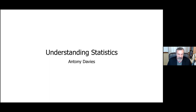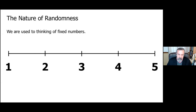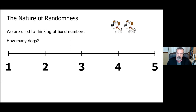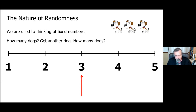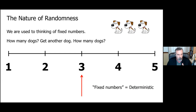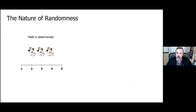I'm going to talk about understanding statistics, and this whole story begins with how we learn mathematics. When we learn mathematics, we're used to thinking of fixed numbers. You have a number line, and your teacher says how many dogs are there, and you identify there are two dogs. Then you get another dog and identify there are three dogs. Doing math like this gives us a sense that numbers are fixed — what we call a deterministic way of thinking. Math is deterministic: you've got something that's two or three or four or 2.5. The numbers are what they are.